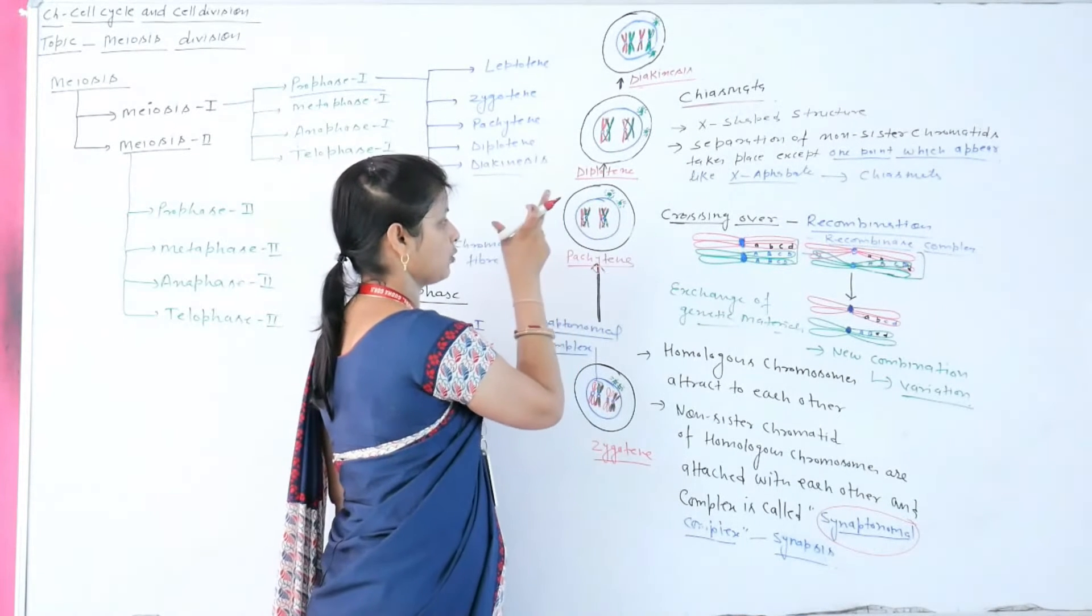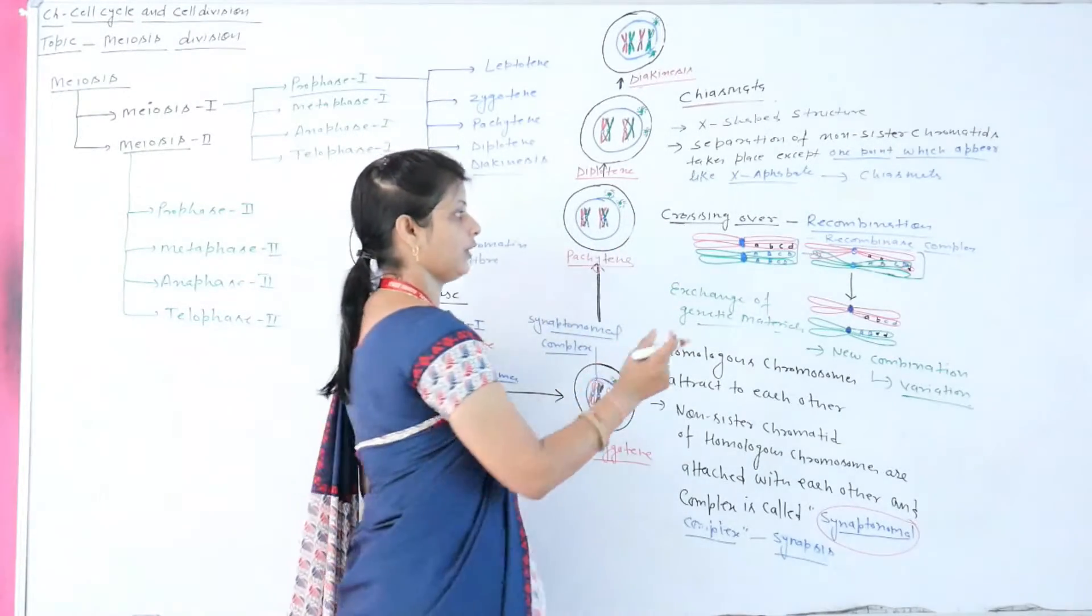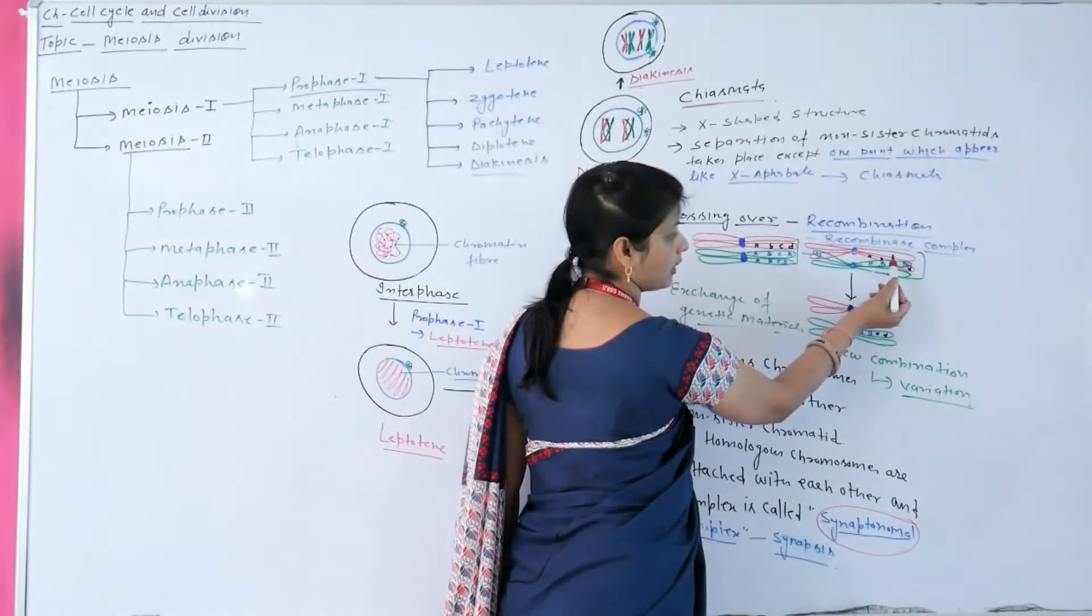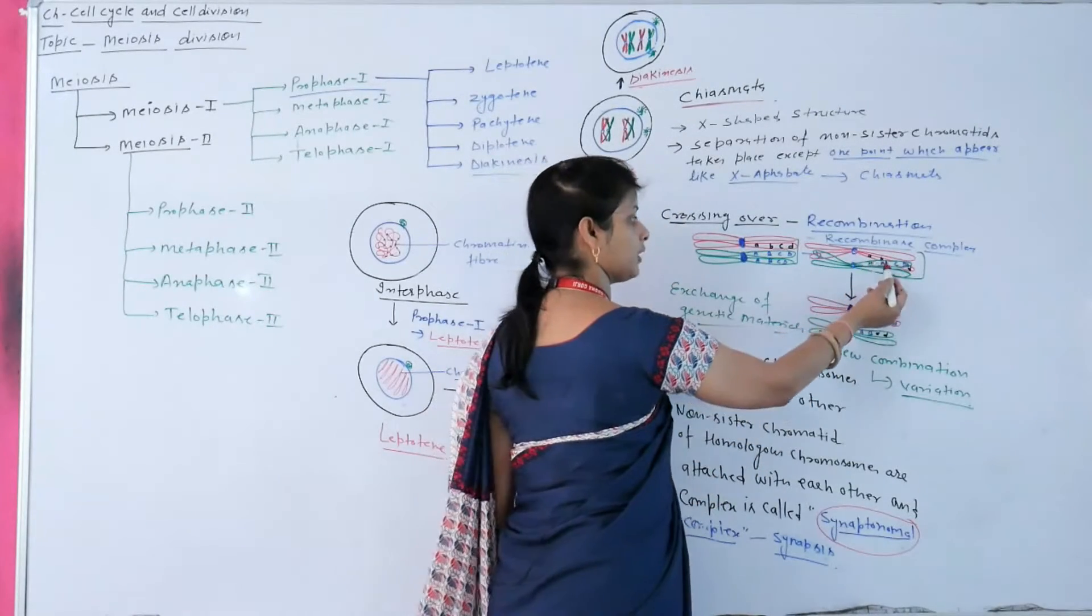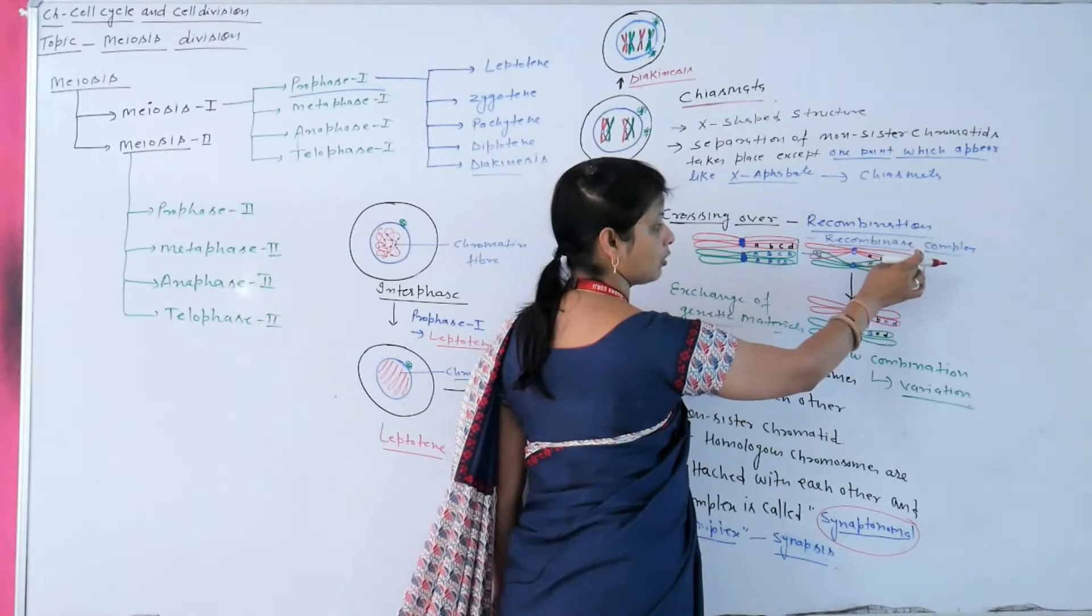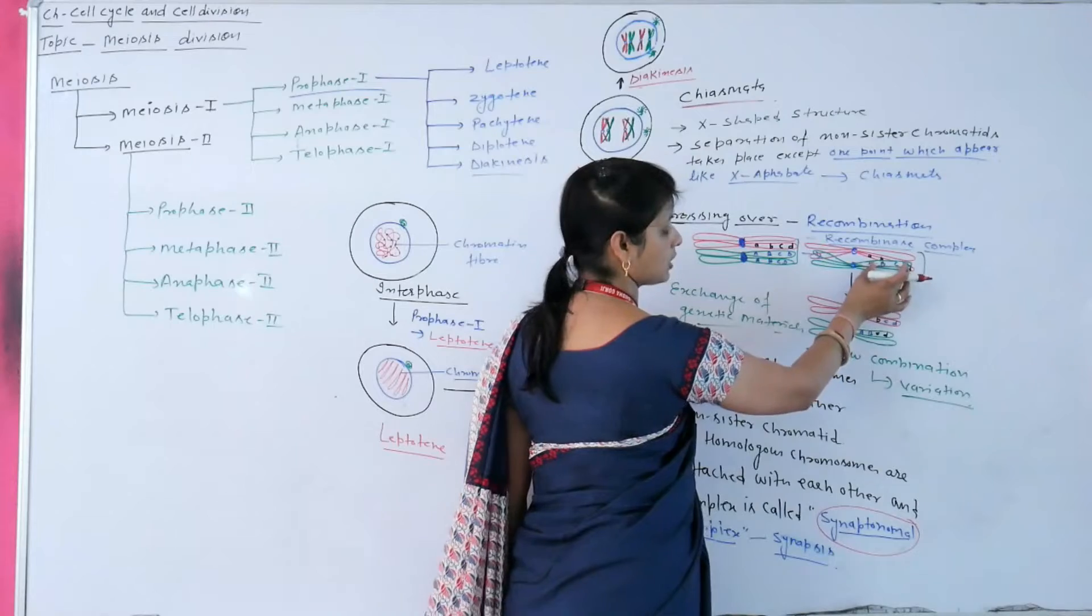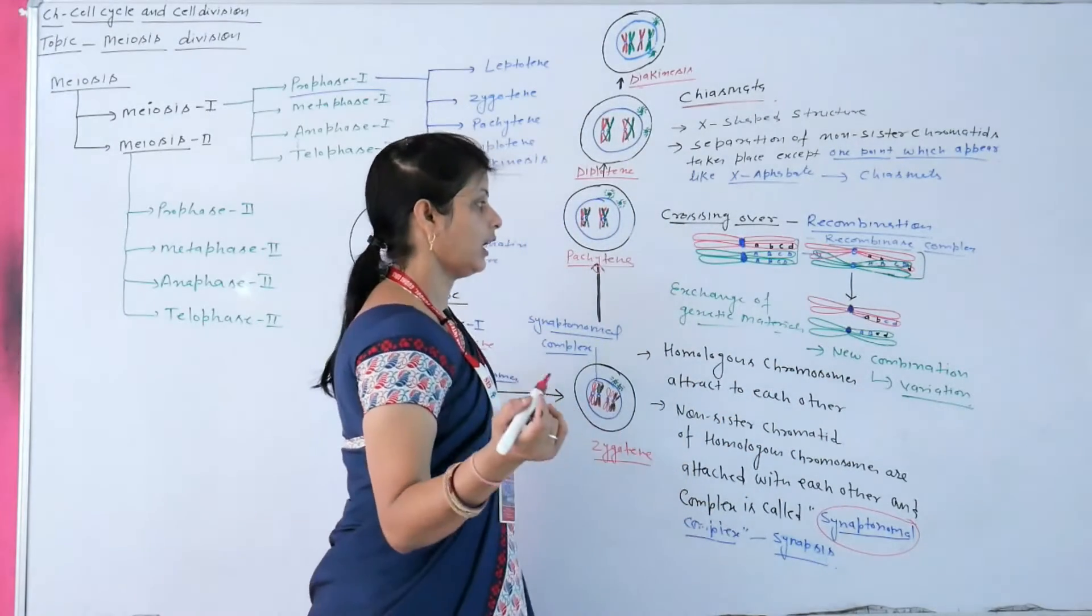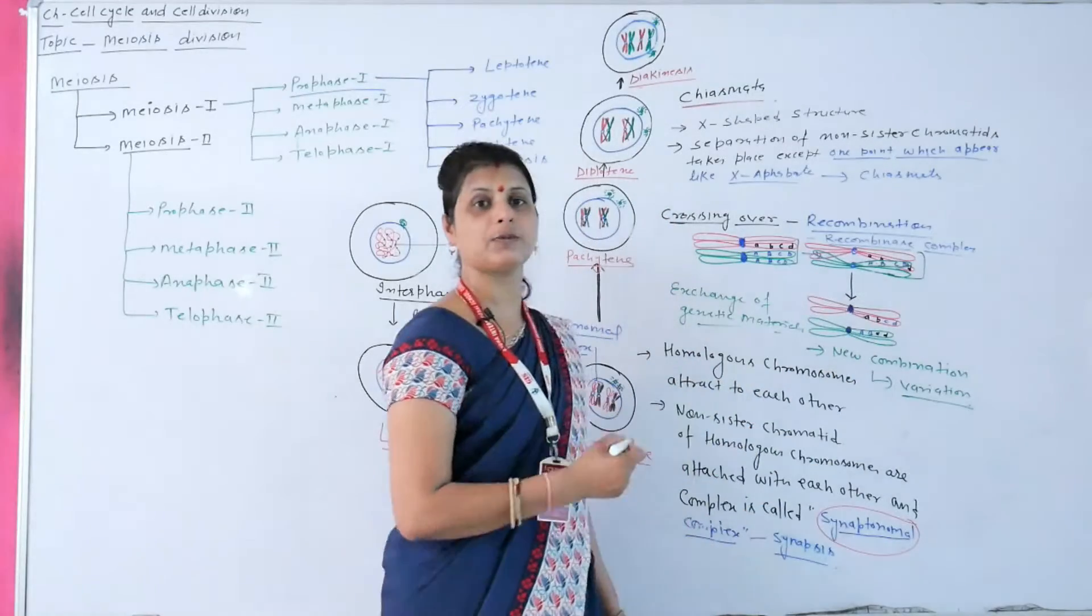Pachytene sub-stage of meiosis prophase I leads to crossing over. During crossing over, non-sister chromatids overlap each other. During this process, as we know, all chromosomes have genes over two chromatids, and during overlapping of non-sister chromatids, exchange of genetic material takes place. This exchange of genetic material causes new combinations.